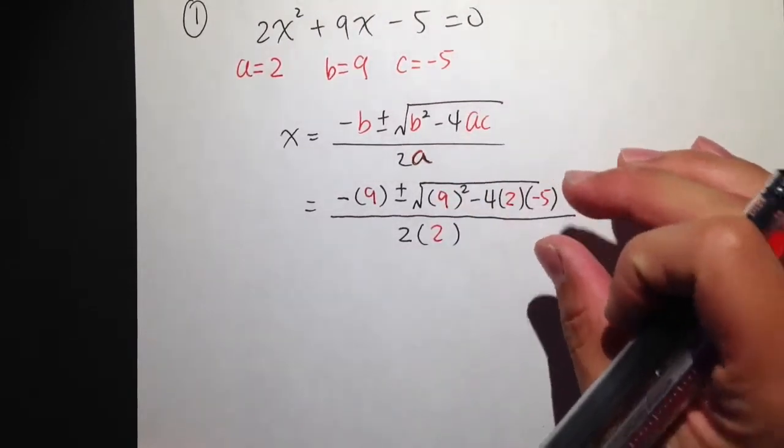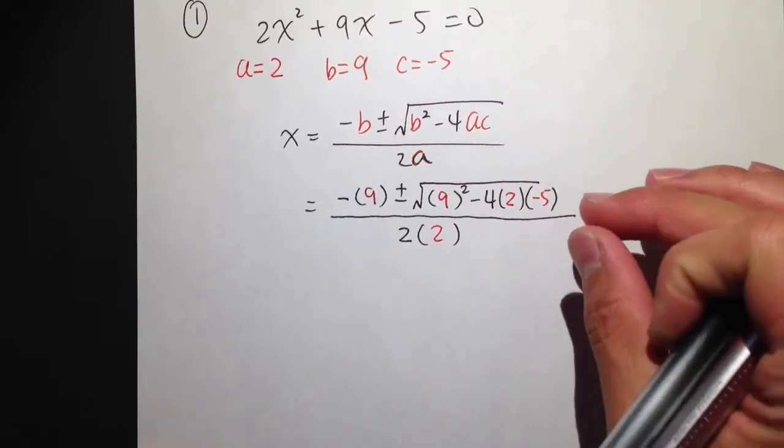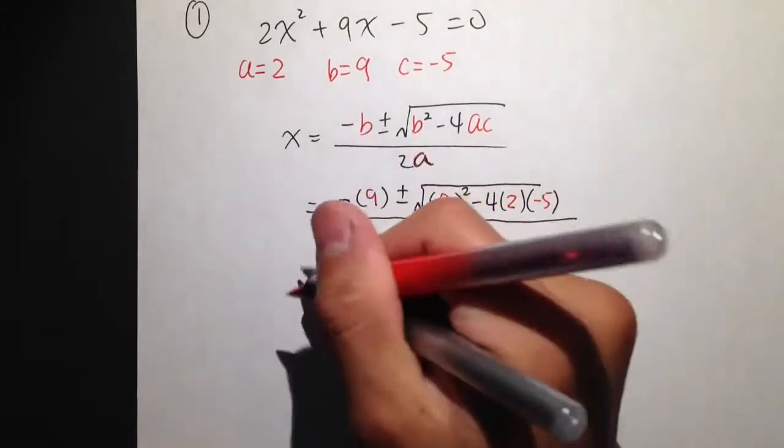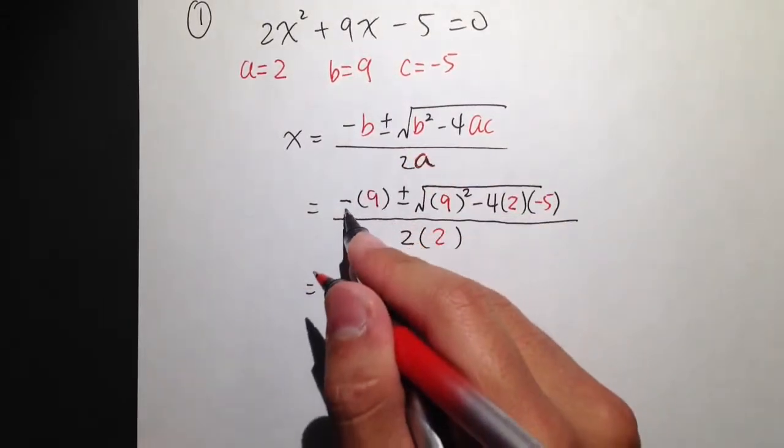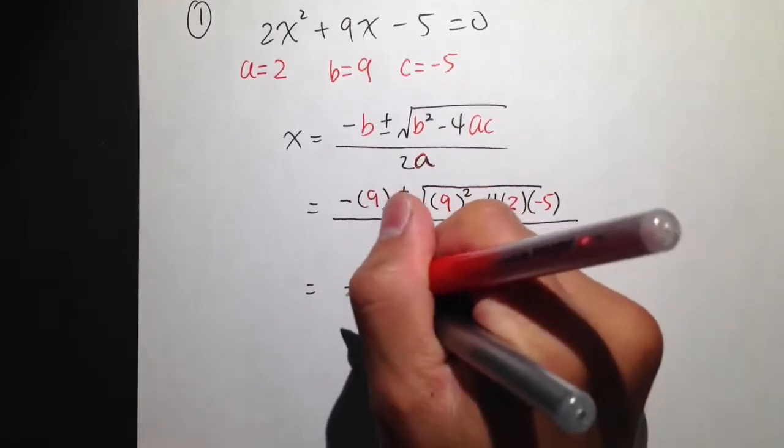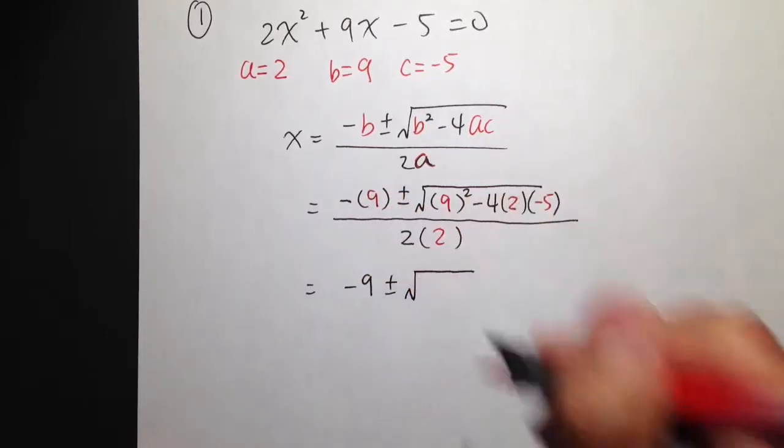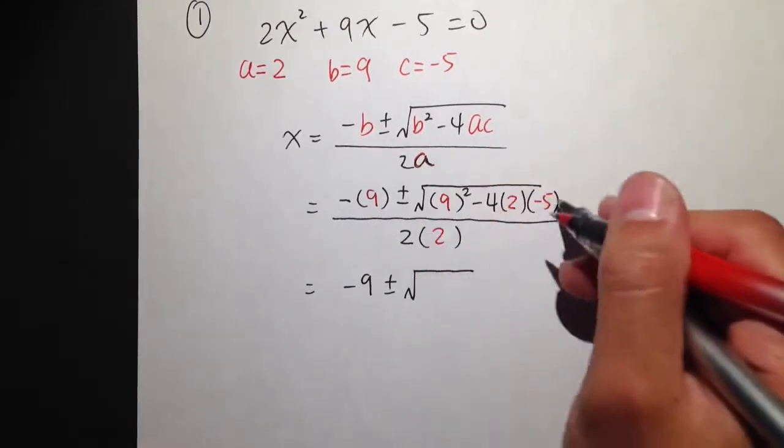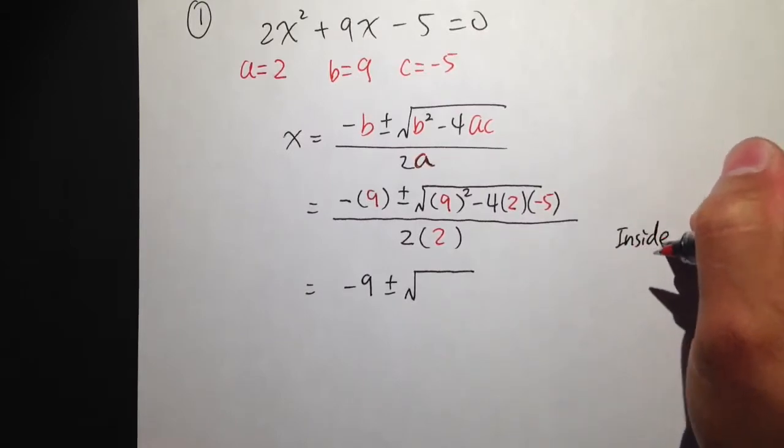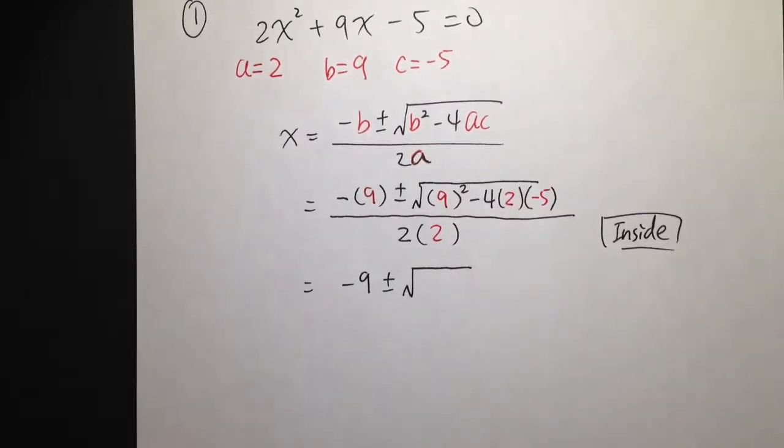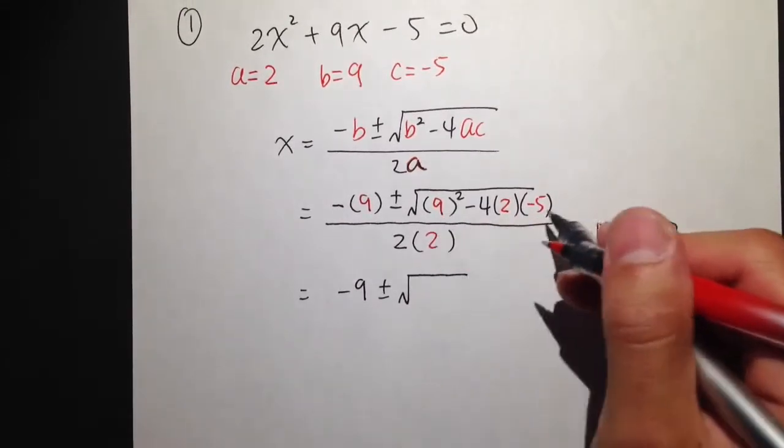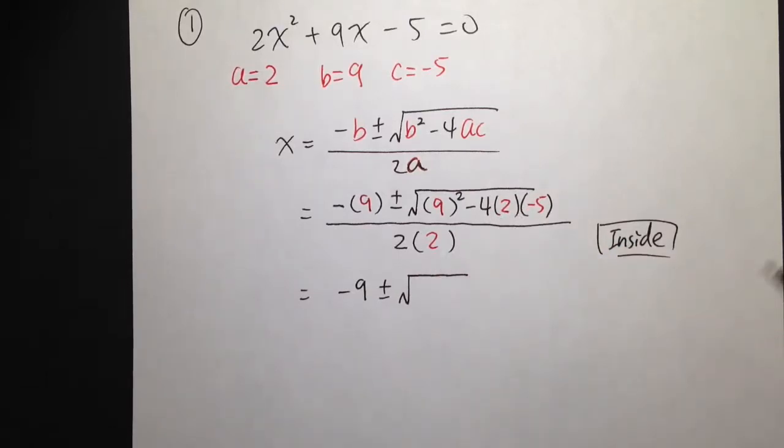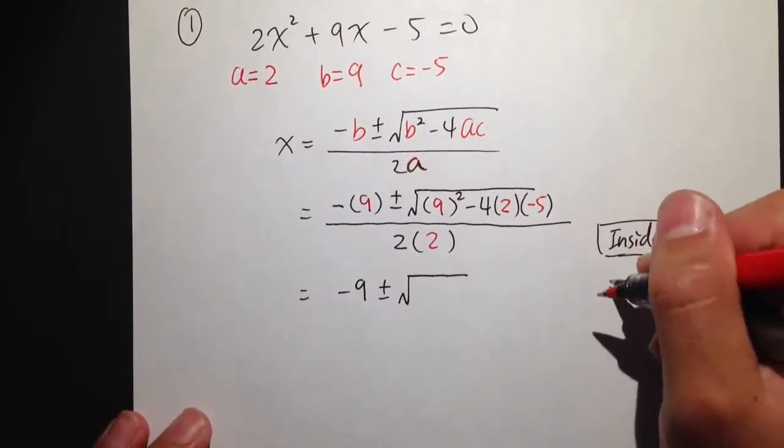Once we set this up, this is nothing but just an order of operation question. We just need to do the calculations, and we'll be able to solve it. So, we will continue by looking at this as negative 9, plus minus the square root. I will need to know what's inside of these calculations. I would like to do it on the side to show you guys what does the inside equal to. You can also use the calculator, just punch in these calculations, these numbers, onto the calculator, and then get the answer. That works. I will show you guys how to do this by hand.